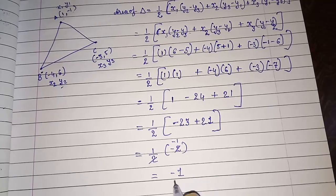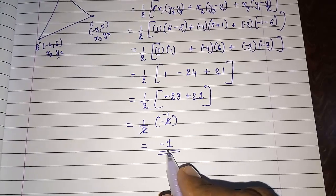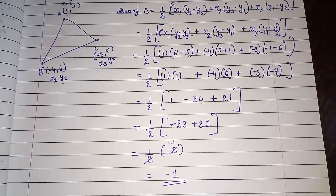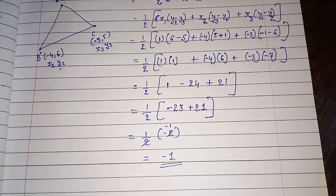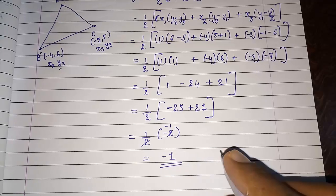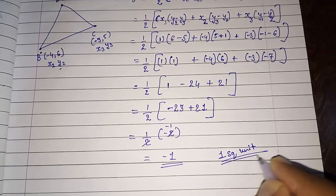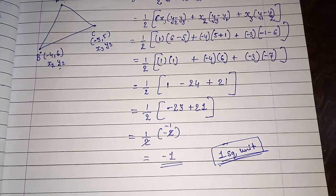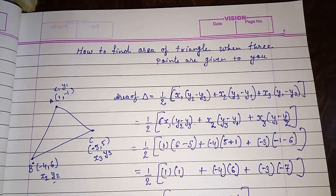You are getting minus 1 as the answer. The area of this triangle appears to be minus 1, but the problem is that area cannot be negative. The negative sign comes from the orientation of the coordinates on the Cartesian plane, but the actual area is not negative. So we take the absolute value, and the area of this triangle is 1 square unit. This is how we find the area of a triangle when 3 points are given.